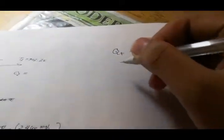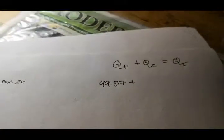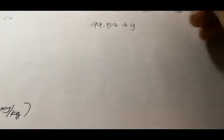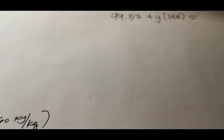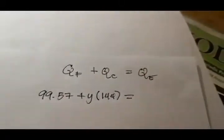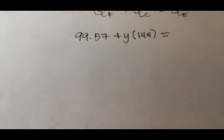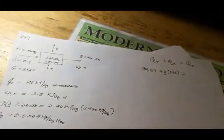We know that QF is 99.57 kJ/s, so we go ahead and write it down: 99.57 plus QC which is Y multiplied by the heat of crystallization which is 144 kJ/kg is equal to QE, the amount transferred to the water to evaporate it.